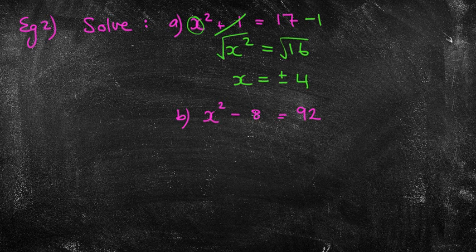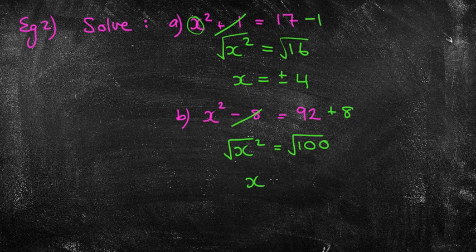How about the next one? What do you reckon? So minus 8 becomes plus 8, so I get x squared equals 100. Therefore, if I square root both sides, we get x equals plus or minus 10.